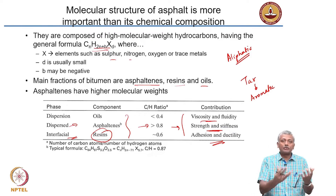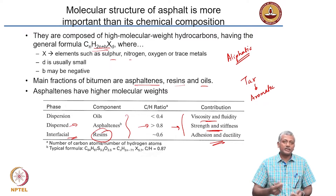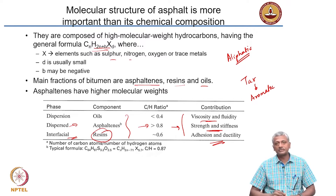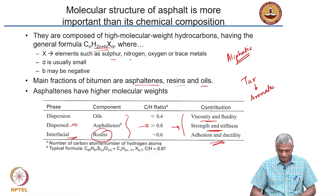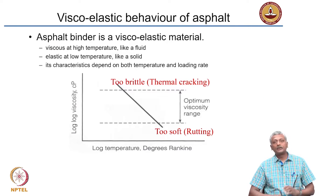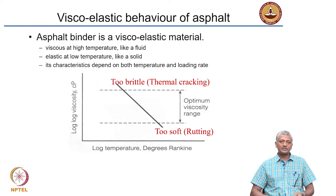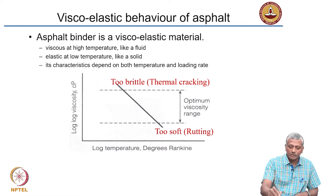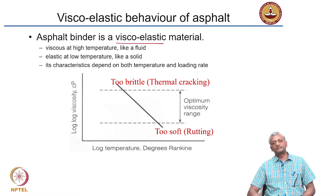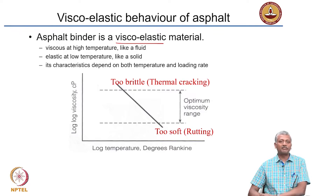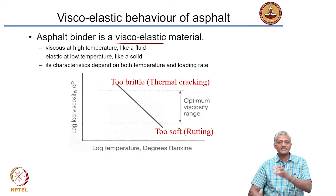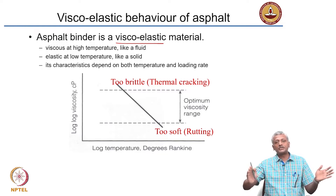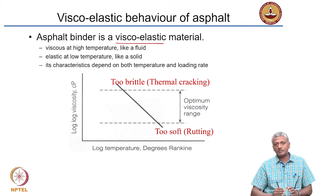Asphalt looks like a uniformly black material, but it is actually composed of several different components which need to be understood carefully. Most importantly, asphalt is highly dependent upon the temperature. Its application is highly dependent upon temperature because asphalt is a viscoelastic material. In the chapter on polymers, we talked about viscoelastic behavior and the range of temperatures over which you can get satisfactory performance as a solid.